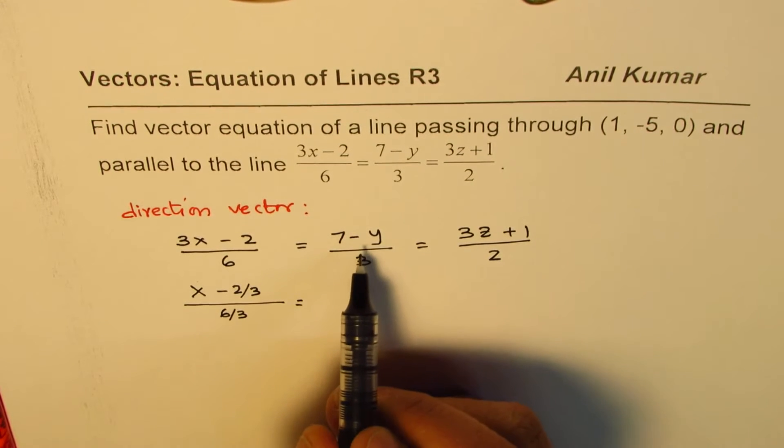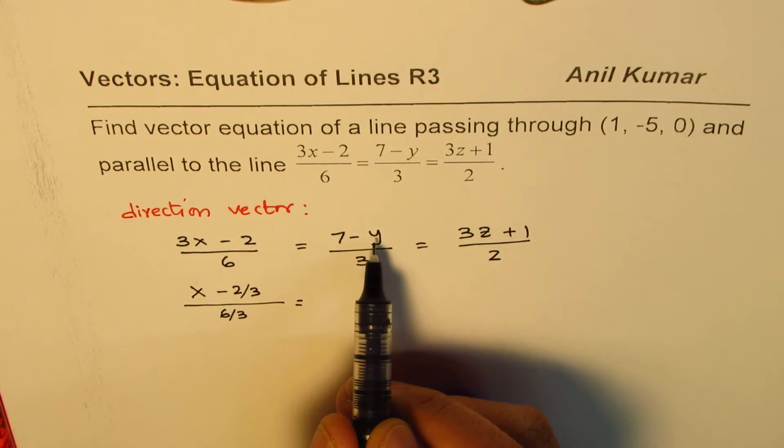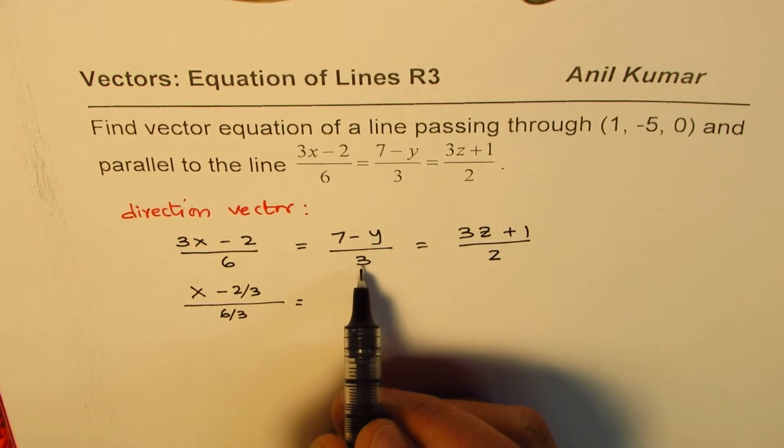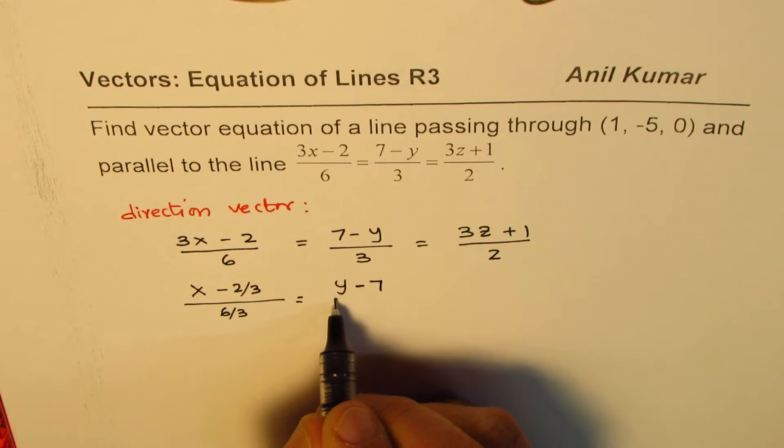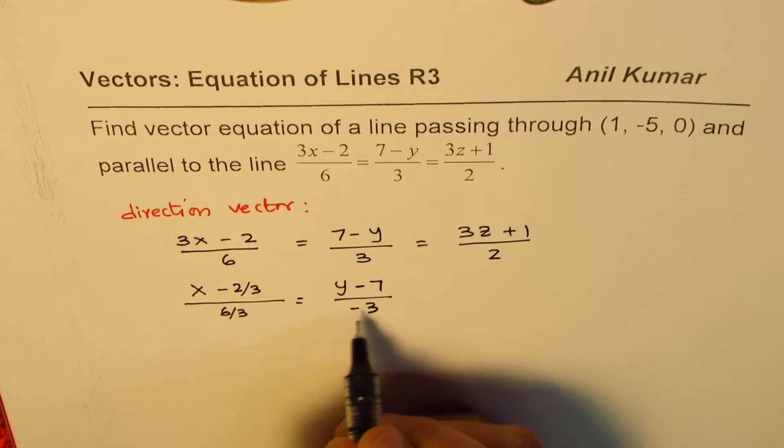Similarly here, what we notice is that it's minus y. We have to write in the form of y minus something. So we can multiply each term by a negative number. So we can write this as (y - 7)/(-3). Do you get the idea?